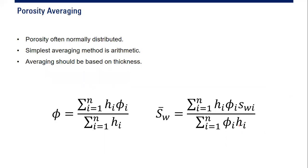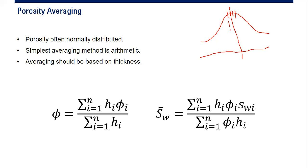Porosity averaging: porosity is often normally distributed — a bell-curve distribution where most values cluster at the center. The simplest averaging method is arithmetic averaging weighted by thickness.